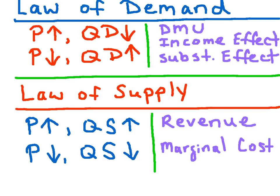The law of supply states that as price rises, quantity supplied will rise, and as price falls, the quantity supplied will fall. This direct relationship can be explained in terms of revenue and marginal cost. As the price rises, producers see more total revenue. But also, as a seller produces more goods, their additional costs are rising — that is, the marginal costs are increasing.